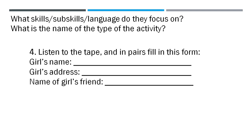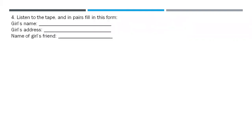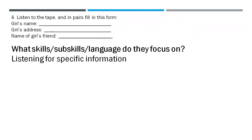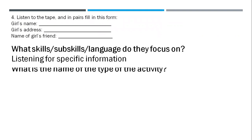Number four: listen to the tape and in pairs fill in this form — girl's name, girl's address, name of girl's friend. Here we have listening for specific information again, and let's call it form filling.